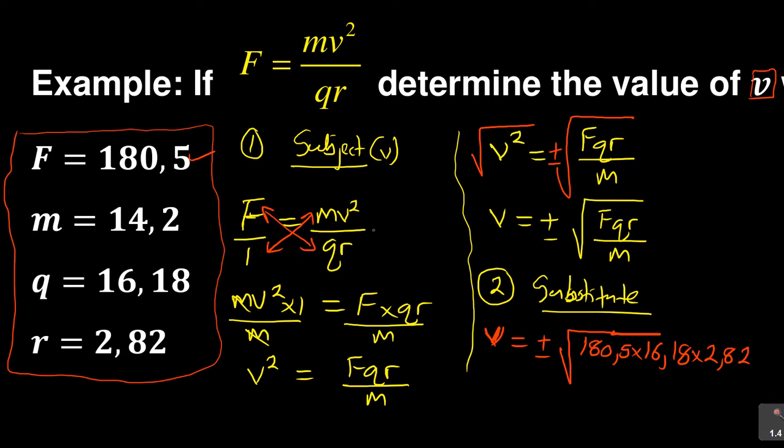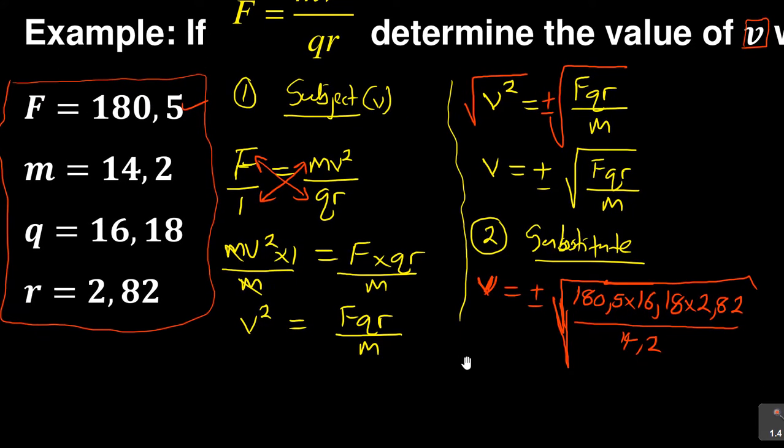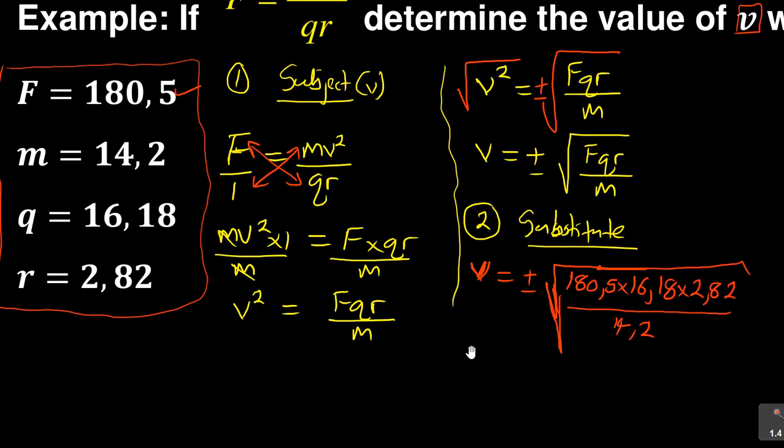You see that these numbers, if you included them or substituted them in the beginning, you were going to be writing all these long numbers and you might end up making some errors. And then after that, all over what is my m, which is 14.2. So be careful that your sign covers everything in that fraction.